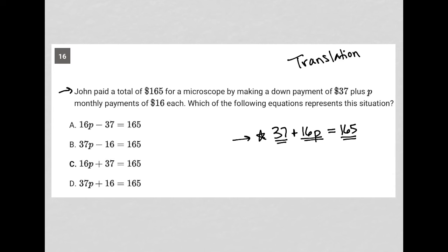$37 plus $16p. Perfect. Choice C. The order of the $37 and $16p are reversed, but that's perfectly fine. These two things match up. So choice C is the correct answer.